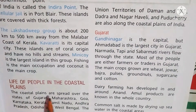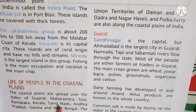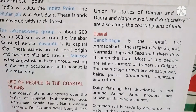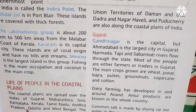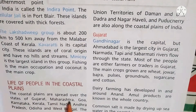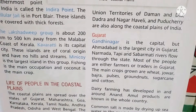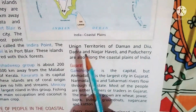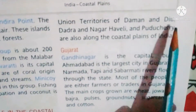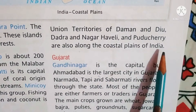The coastal plains are spread over the states of Gujarat, Maharashtra, Goa, Karnataka, Kerala, Tamil Nadu, and Andhra Pradesh. The Union Territories along the coast include Daman and Diu, Dadra and Nagar Haveli, and Puducherry.